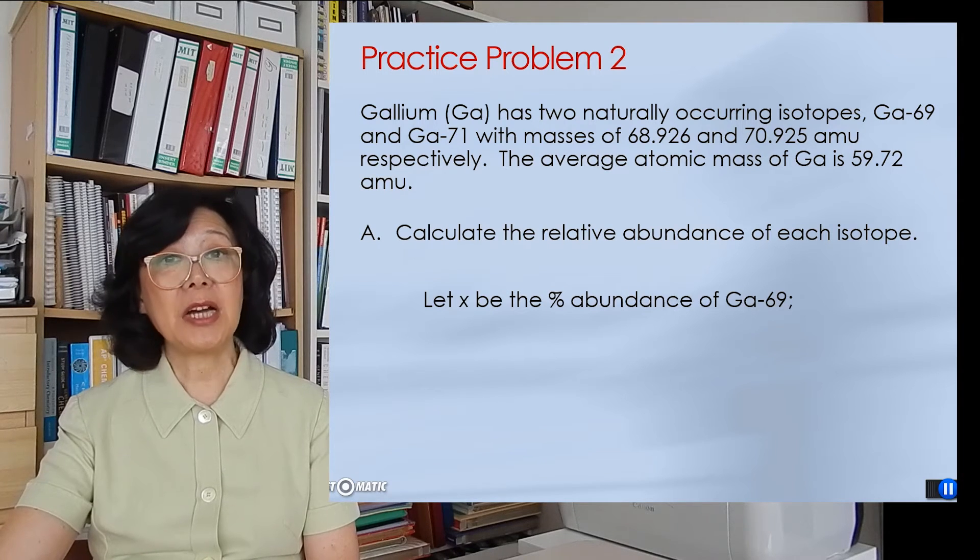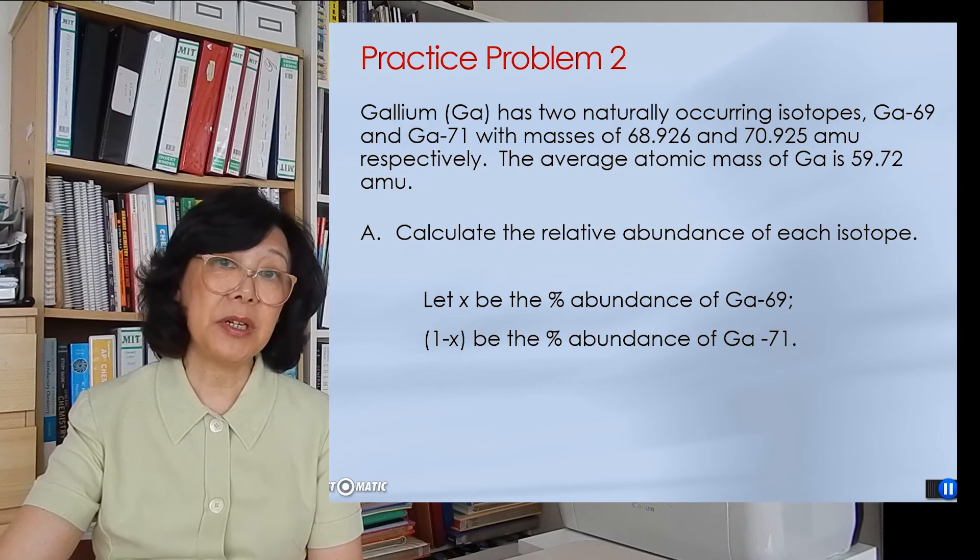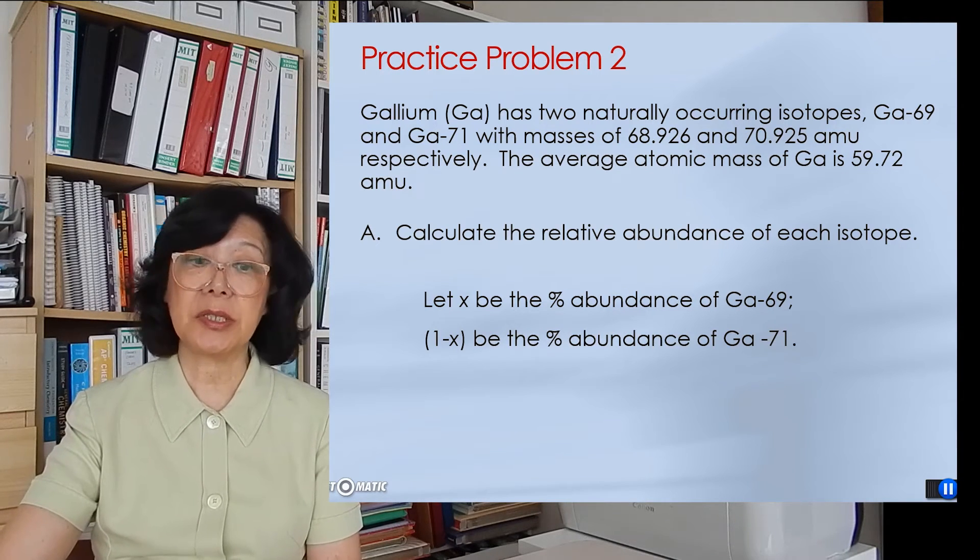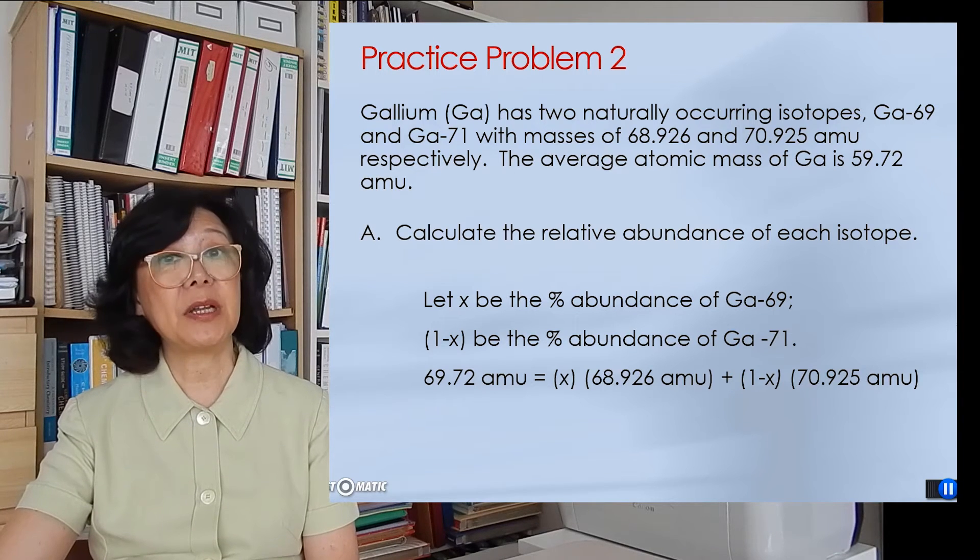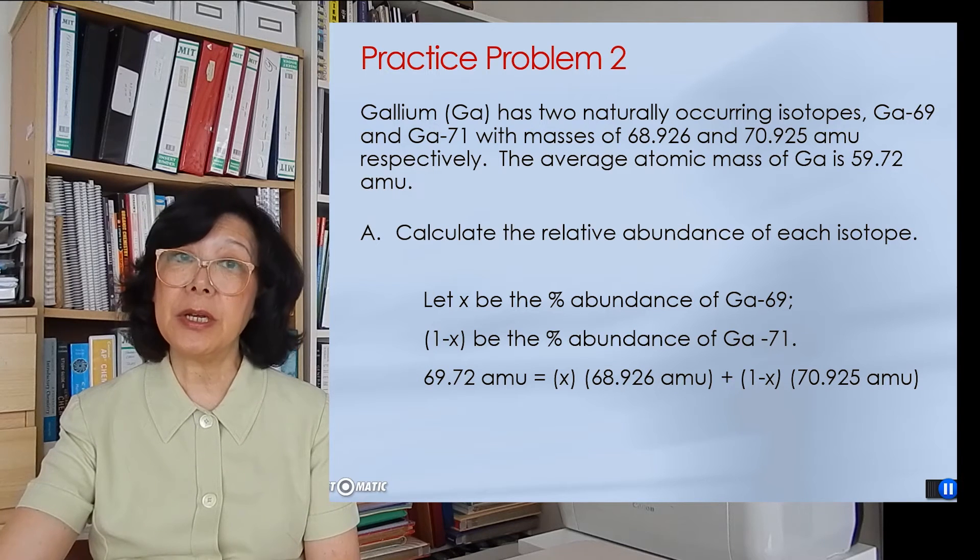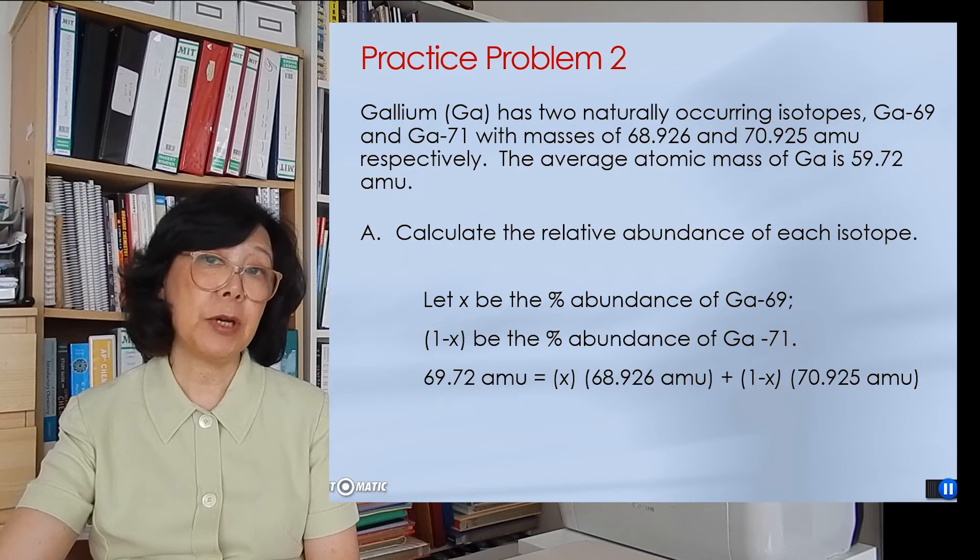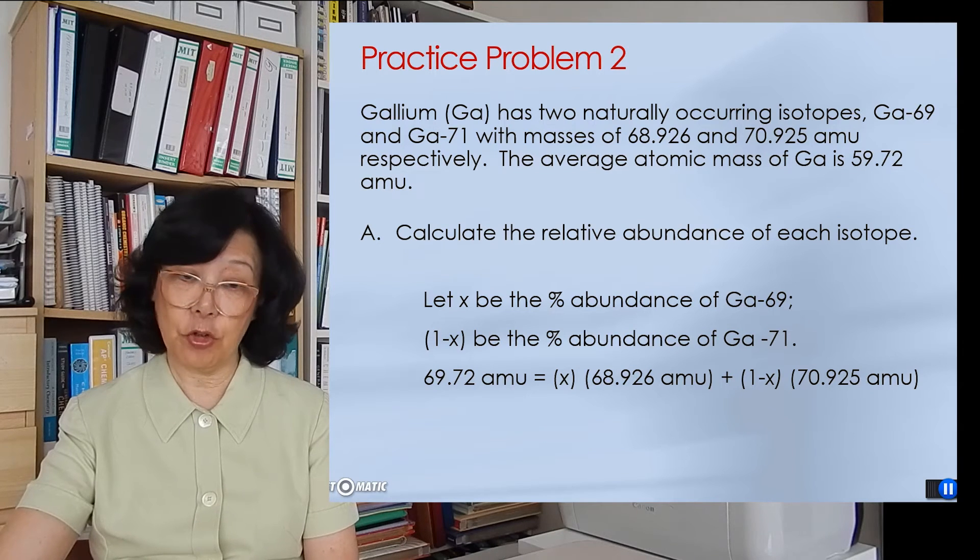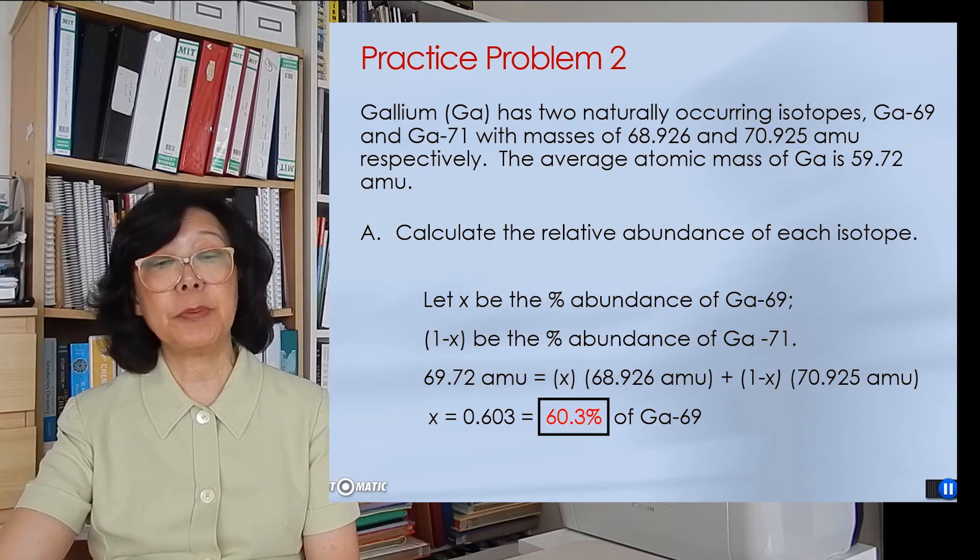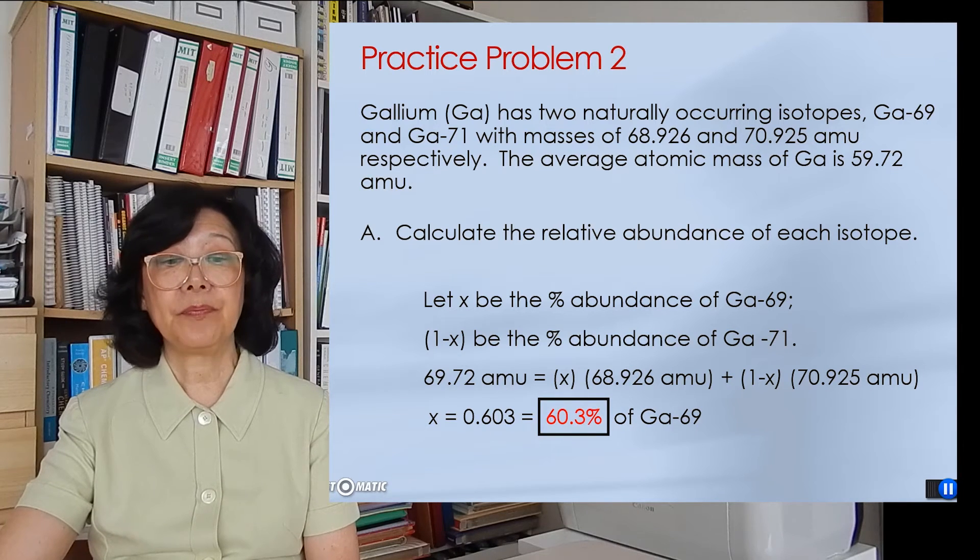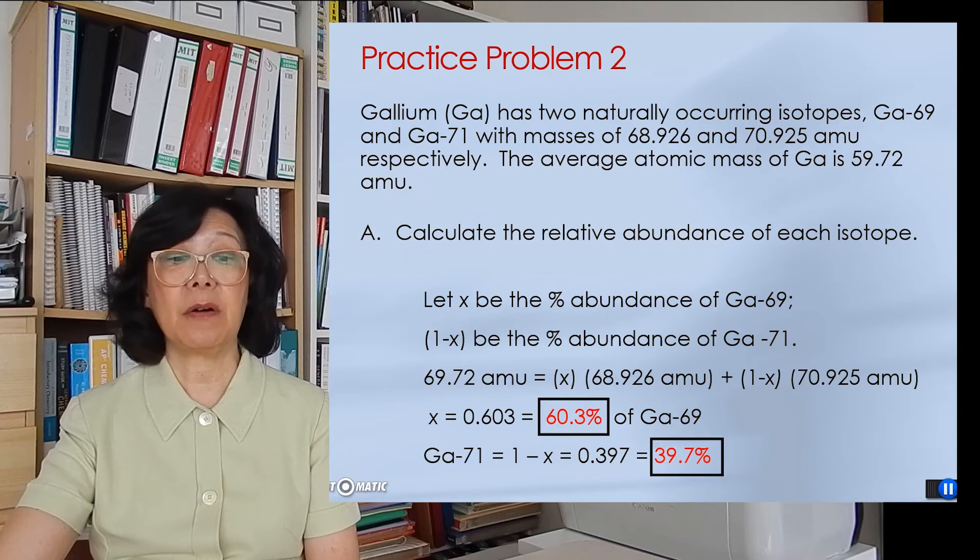First, let X be the percentage of gallium-69. And therefore gallium-71 must be 1 minus X. Now let's multiply the relative percent abundance by the individual atomic mass unit and add it together. We obtain 69.72 amu being the weighted average. Calculating for that, X is 60.3% of gallium-69, and 1 minus X is 39.7% of gallium-71.